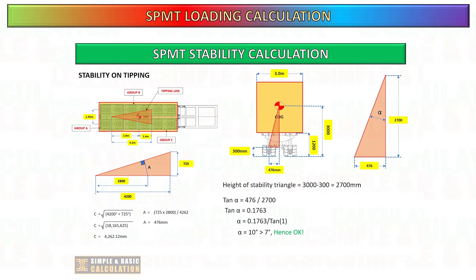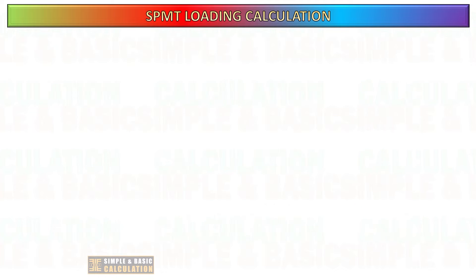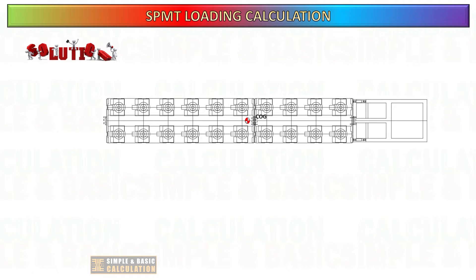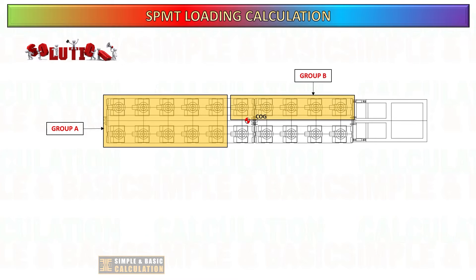You can refer to my previous video regarding how to do the grouping and stability calculation for self-propelled modular transporter, see link in the description below. For this example, for transporting a water tank we are using a 10 axle line of self-propelled modular transporter with a power pack unit and our plan is to use a three-point grouping method.